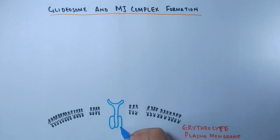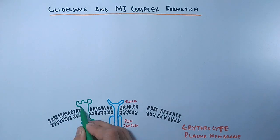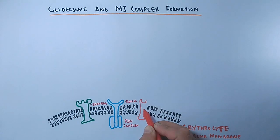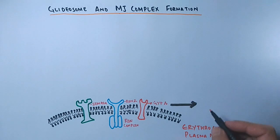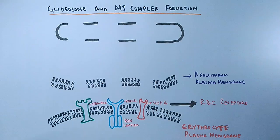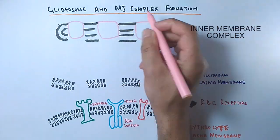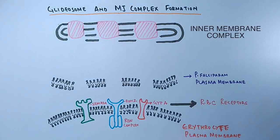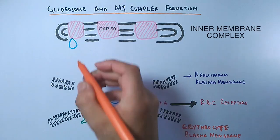Looking at the erythrocyte membrane, we have different receptors like RON complex, SEMA7A, and glycophorin A. And from the Plasmodium cell we see it has the IMC, that's the inner membrane complex. This inner membrane complex powers the migration and invasion of Plasmodium into the host cell.